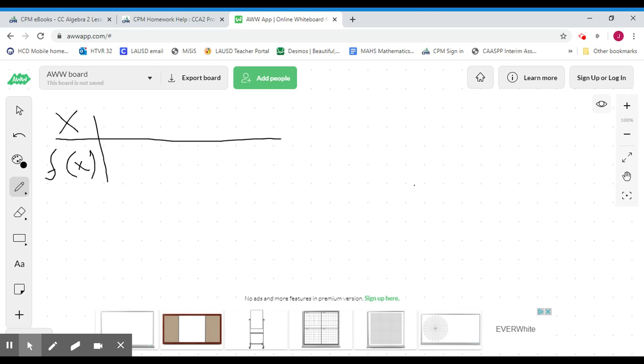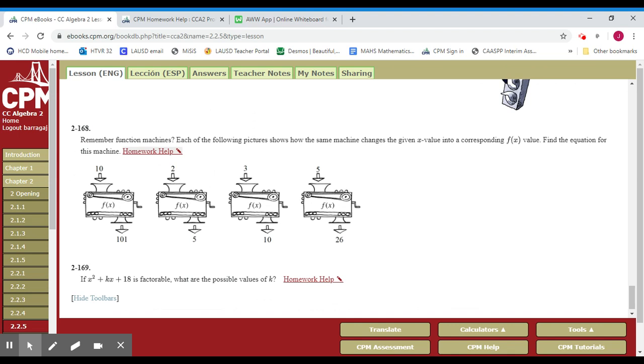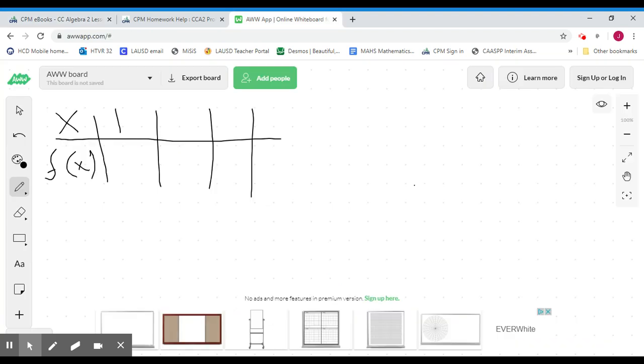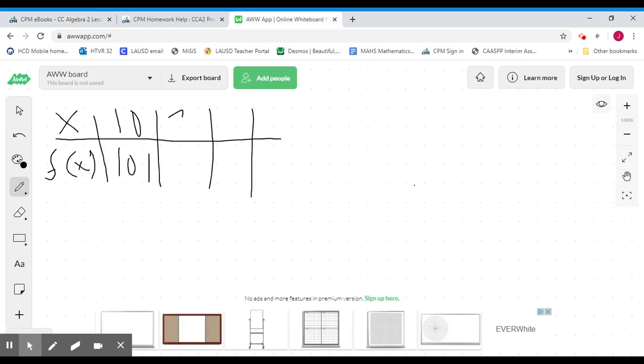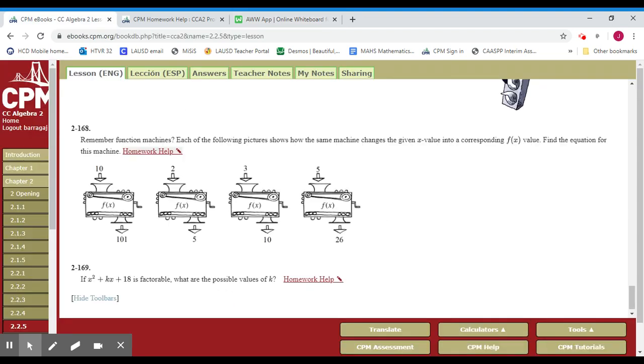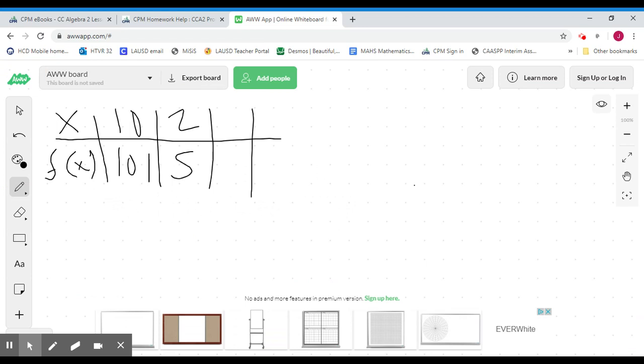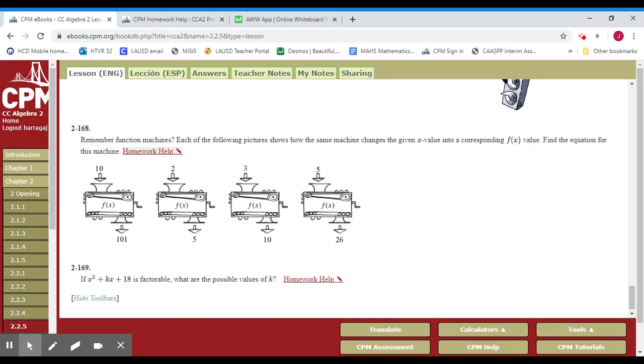So here's my inputs, here's my output right, my function. And I think there was four machines. Let me go back to the problem. So if I input 10 I get what, 101.